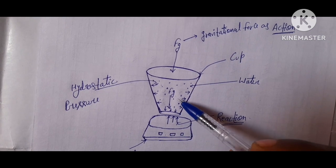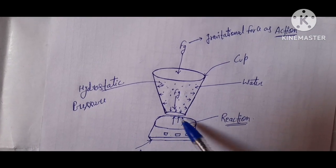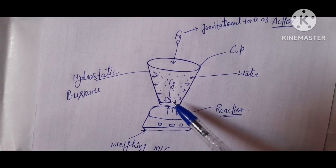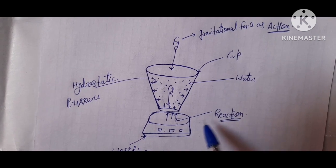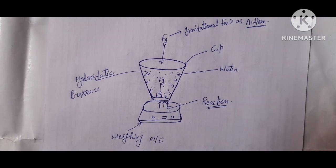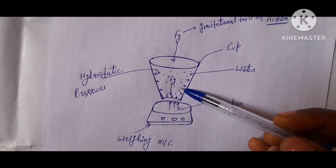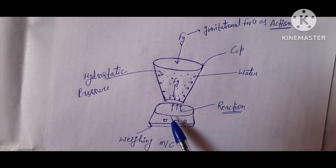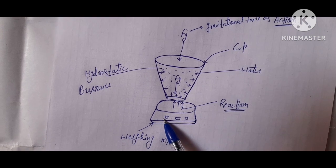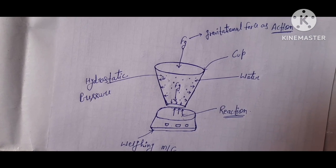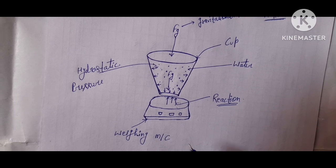This gravitational force acts as the action, and as you know, every action has an equal and opposite reaction. So all the action in the downward direction of the water and cup is countered by an equal and opposite reaction from the weighing scale, and it is this reaction that the weighing machine measures — not the actual weight of the object.